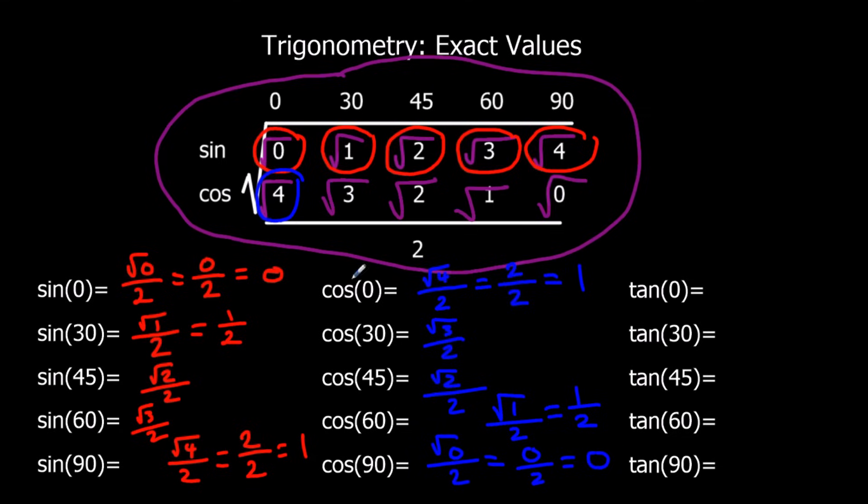You can see that the sine values go up. We've got 0 here. Sin 0 is the same as cos 90. Sin 30 is the same as cos 60. Sin 45 is the same as cos 45. They're kind of in reverse order.